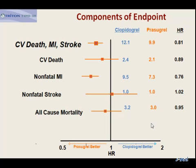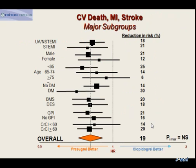That reduction by 19% was largely driven by a reduction in nonfatal myocardial infarction. There was a trend for a reduction in cardiovascular mortality, modest, and a very modest trend for all-cause mortality. Nonfatal stroke was not affected. Importantly, the effect of prasugrel was homogeneous across various subgroups with no statistically significant interaction according to type of ACS, gender, age, diabetes presence, type of stent, use of GPI, or renal function, so that in all of these subgroups, the effect is assumed to be similar to the overall effect.